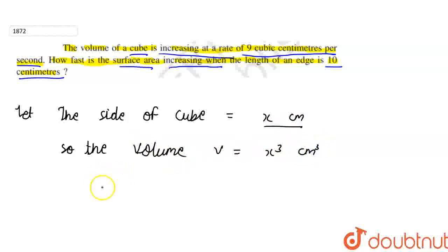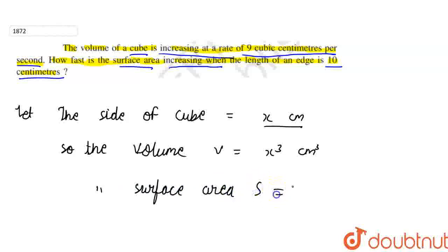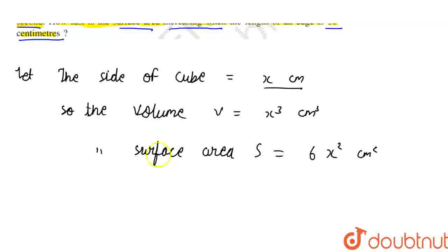And the surface area, capital S, will be equal to 6 times x squared (cm²). So this is the surface area formula.